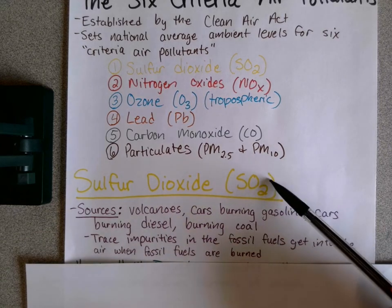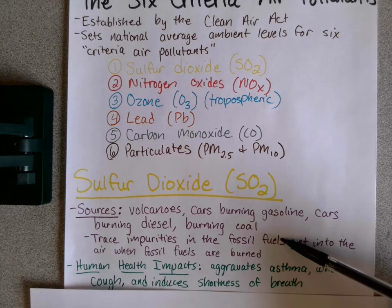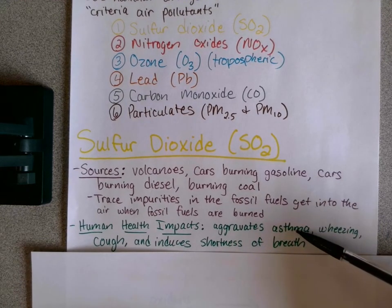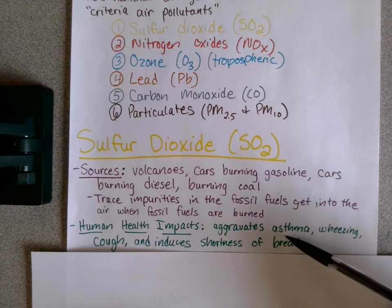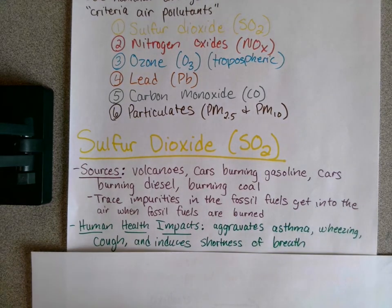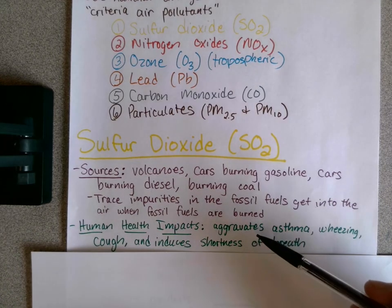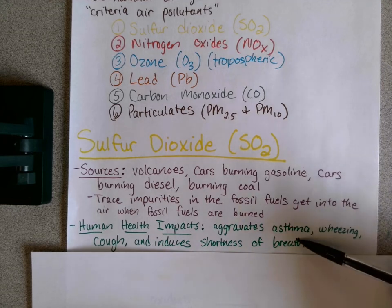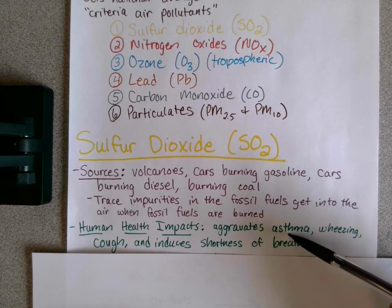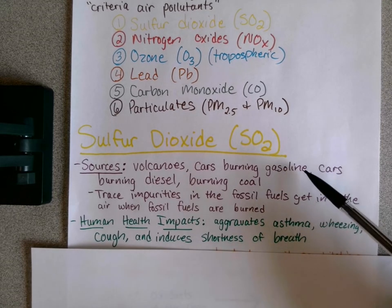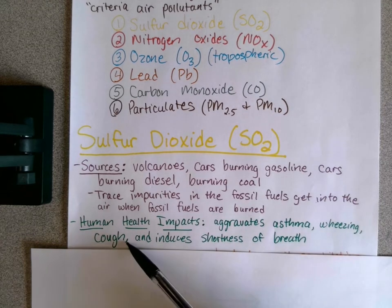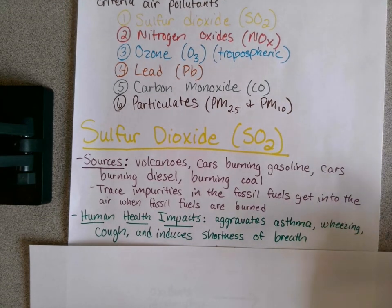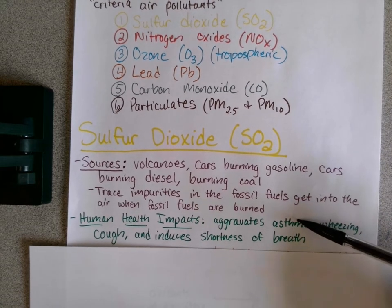Make sure you know the abbreviations for each one. For human health impacts, SO2 aggravates asthma. Asthma is a condition where the tubes in your lungs start constricting and it's really hard to breathe. It's usually treated with an inhaler. Breathing in sulfur dioxide will aggravate asthmatics — you'll have wheezing, coughing, and shortness of breath, where you feel like you can't get your breath.